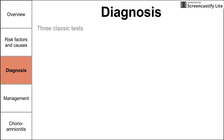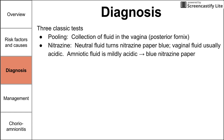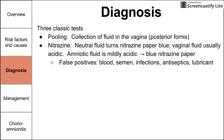To diagnose premature rupture of membranes, there are three classic tests, and some say you need two of the three. First is pooling — a collection of fluid in the vagina, specifically in the posterior fornix, usually seen on speculum exam. Second is the nitrazine test, a chemical that turns blue when exposed to neutral-pH fluids. Vaginal fluid is acidic, amniotic fluid is mildly basic, and the mixture is more neutral, turning the nitrazine paper blue. False positives can be caused by blood, semen, infections, antiseptics, and lubricants, so avoid applying gel to the speculum.